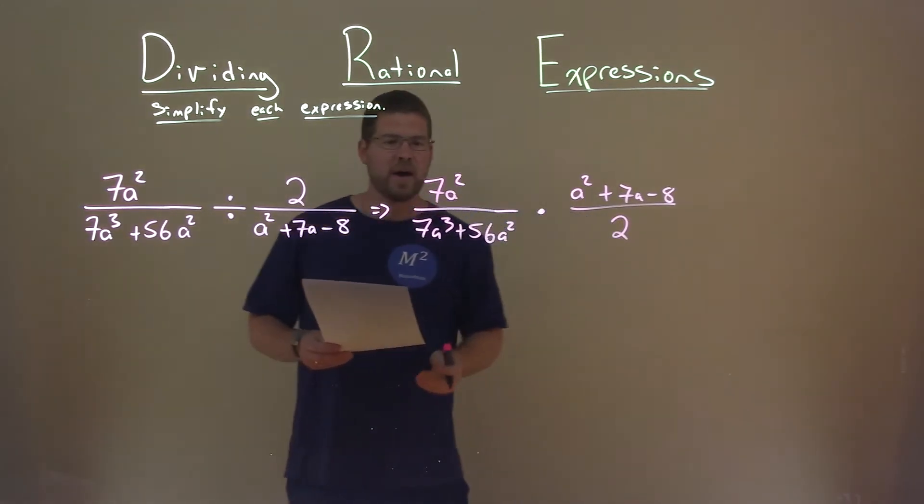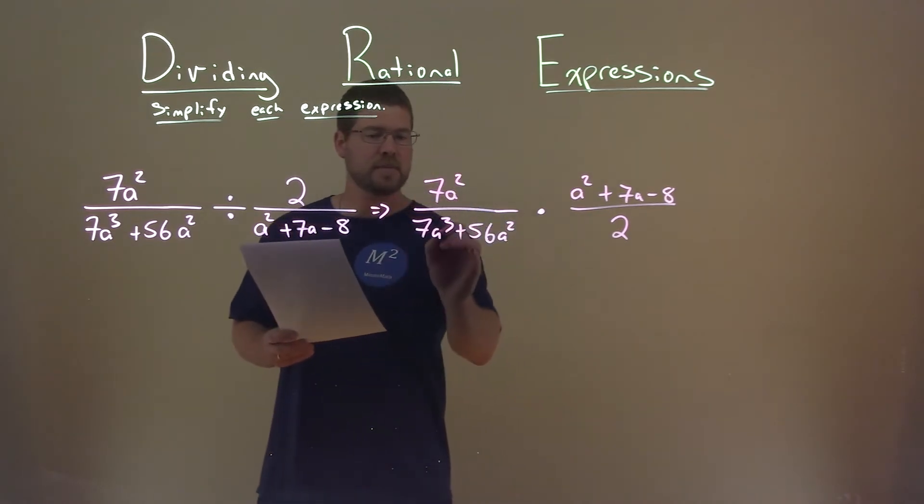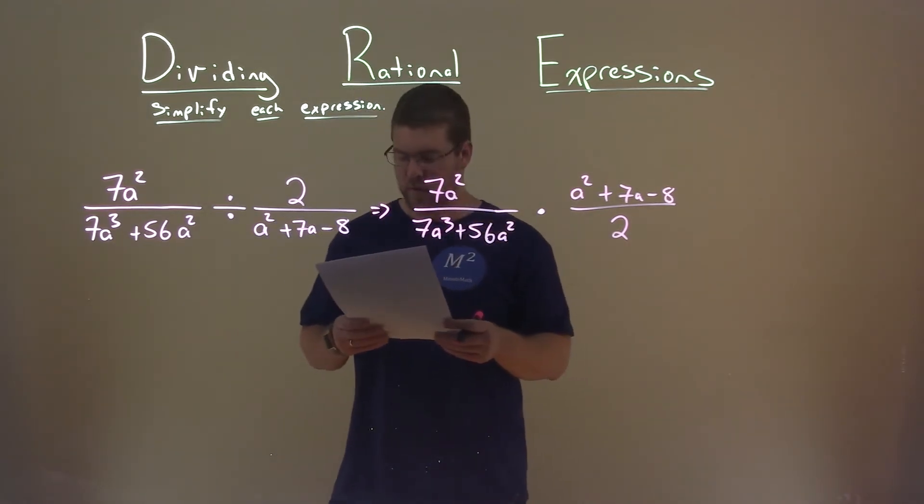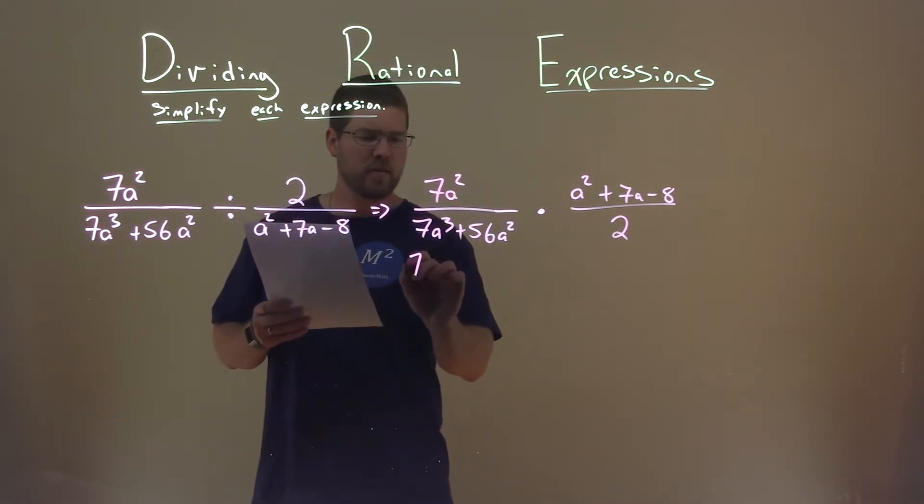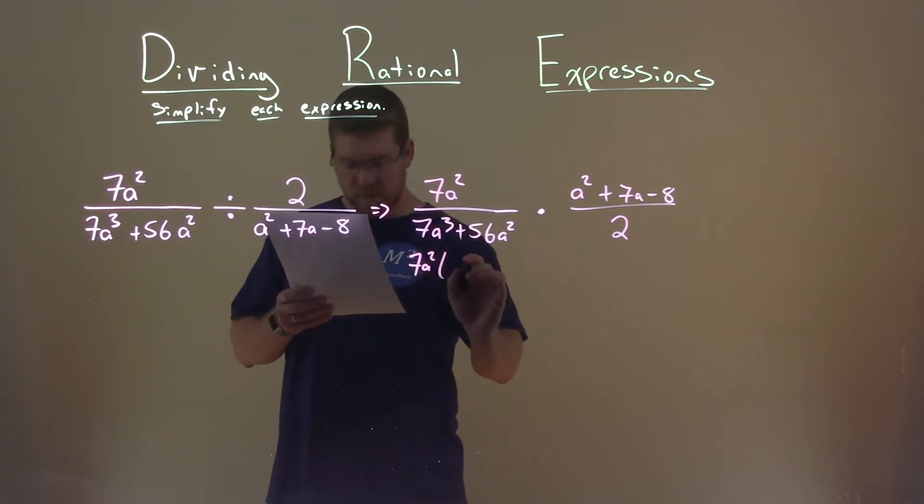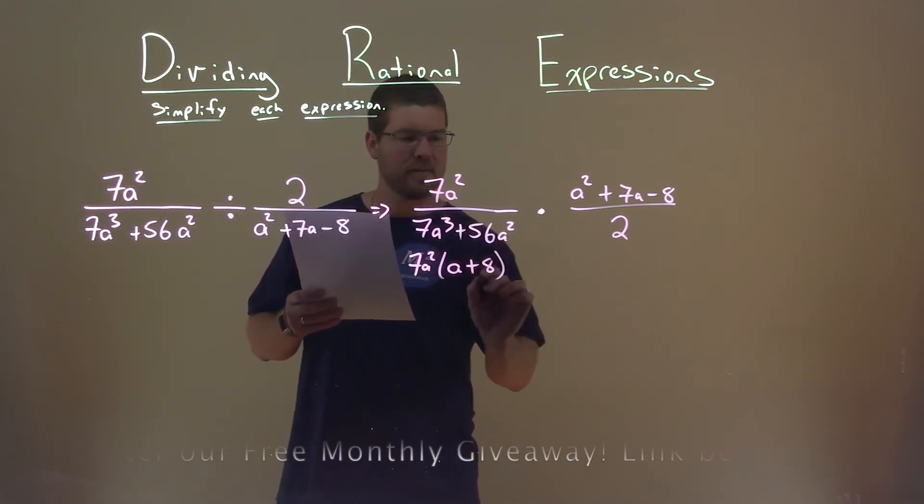Alright, so now I'm going to factor where I can. 7a to the third plus 56a squared. 7a squared is in both parts, and it leaves me with an a plus 8 left over.